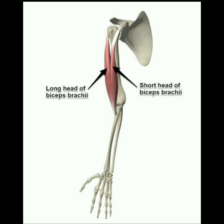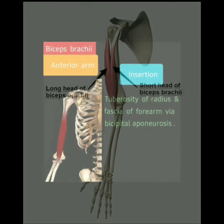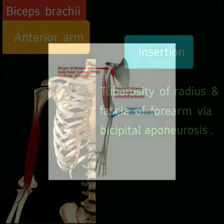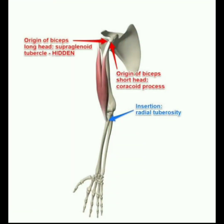This image shows both the short head and long head of the biceps brachii muscle. The insertion of biceps brachii muscle is into the tuberosity of the radius and the fascia of the forearm via the bicipital aponeurosis. This image marks both the origin and insertion of the biceps brachii muscle.